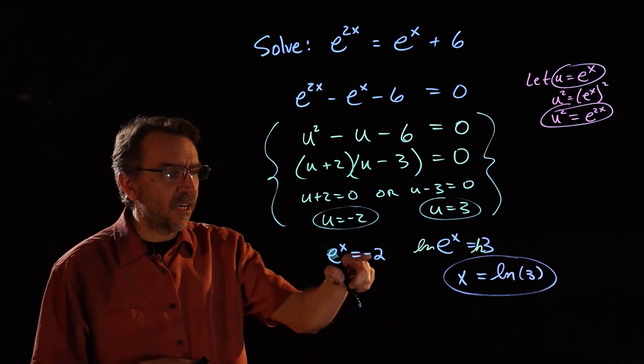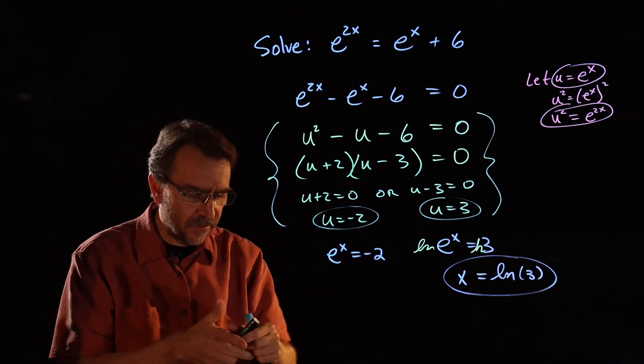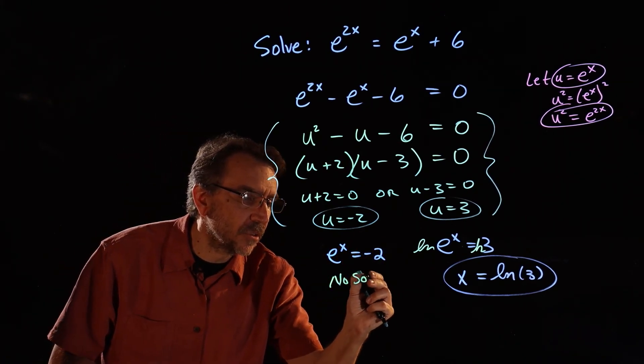And then here, if I take the natural log of both sides, I'll have the natural log of negative 2. e to the x is never negative. So this one actually produces no solutions.